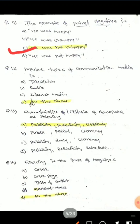Question 11: What are the popular types of communication media? Options are: television, radio, internet media, all of the above. The correct answer is all of the above — television, radio, and internet media are all communication media.